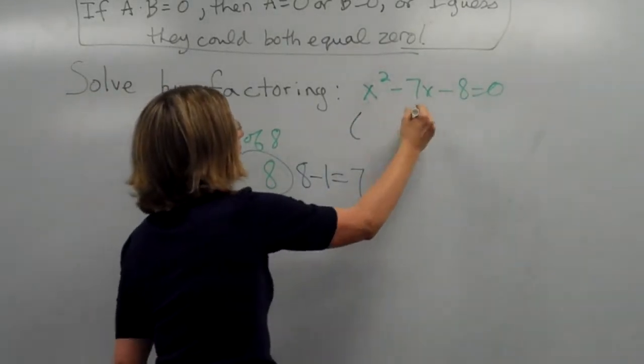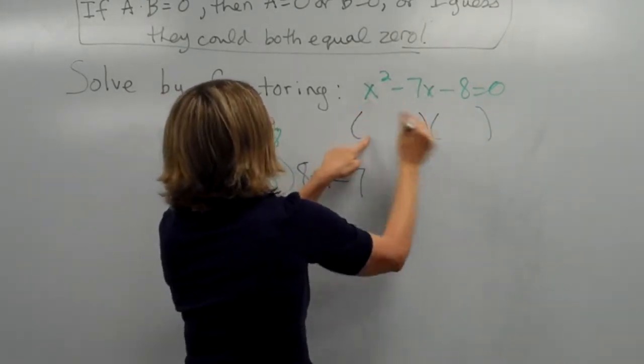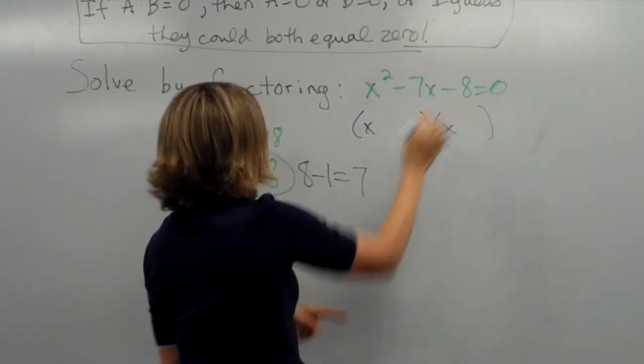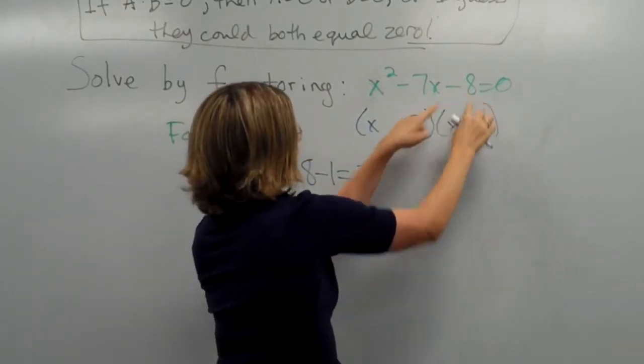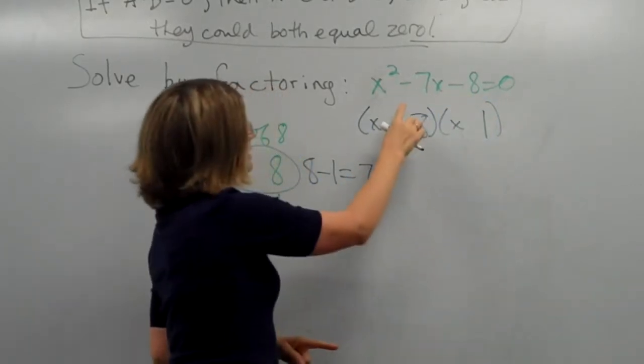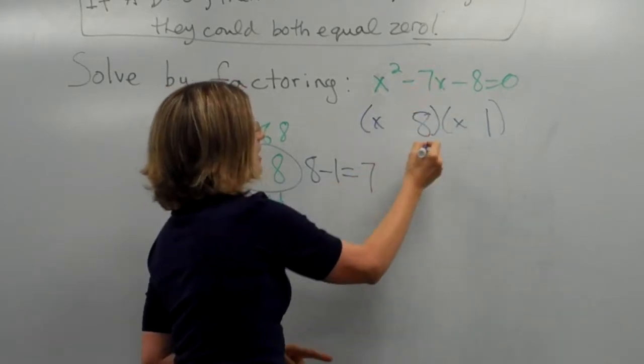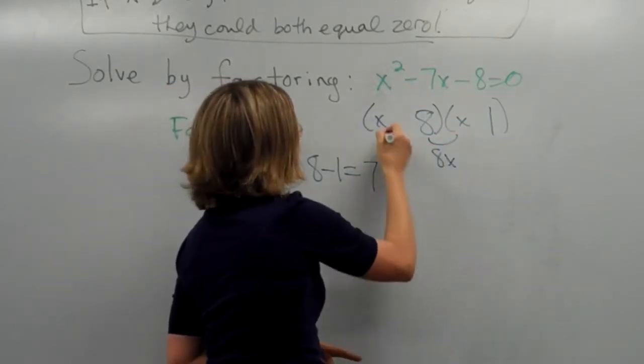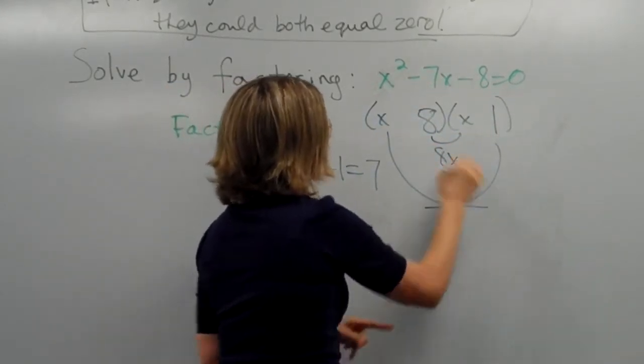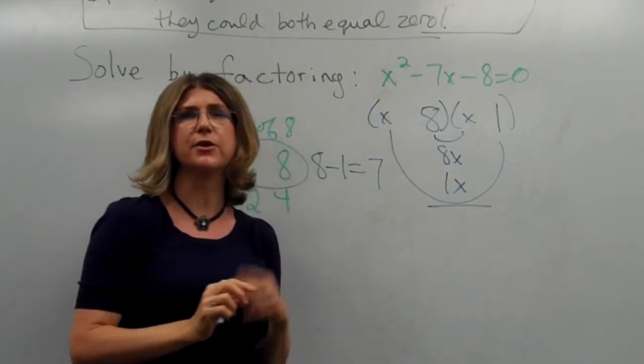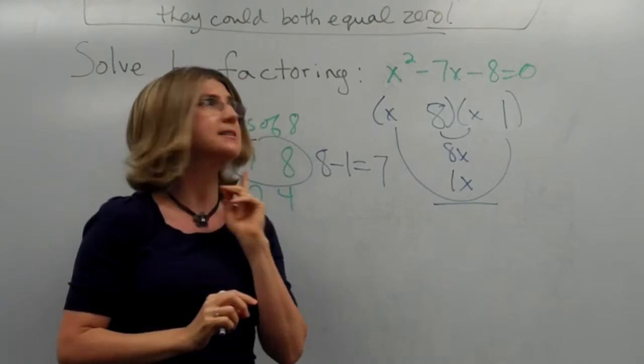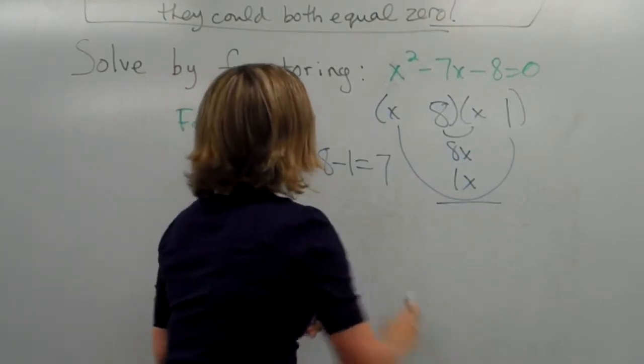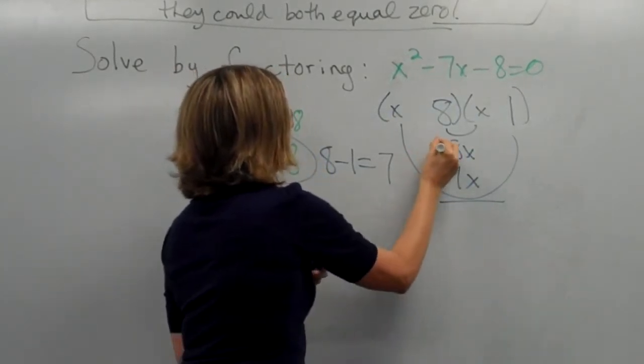So, here, the x splits into x times x, and the eight splits into eight and one. Eight and one. Now, in order to make this into negative seven x, we need to think of eight x and one x. Which one should we give the negative sign to to make it negative seven x? So, think about that. Well,